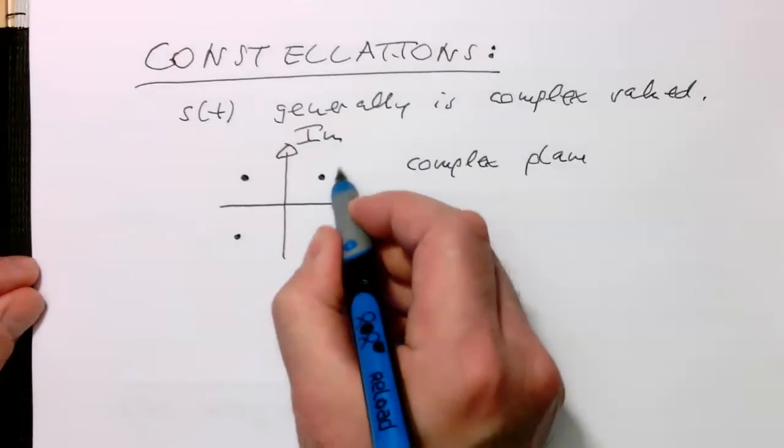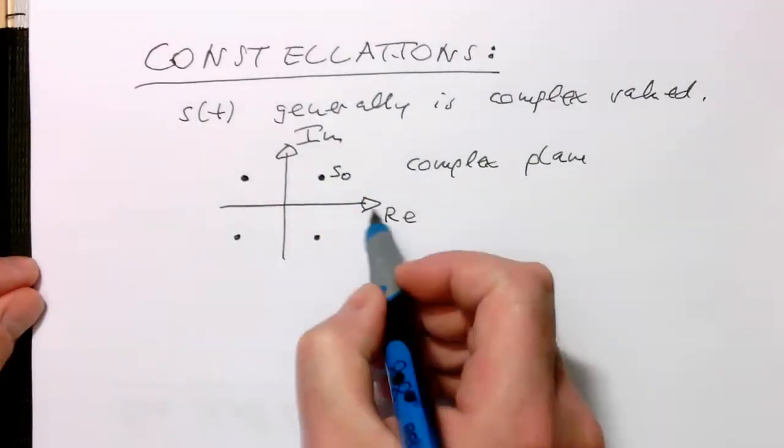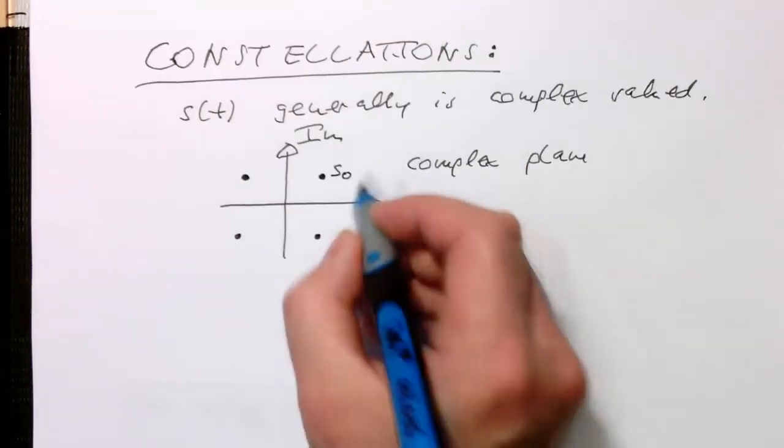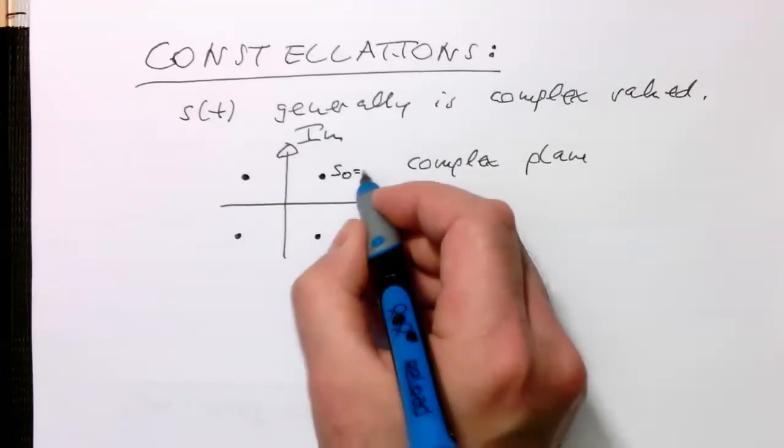So for example, let's say this is S0, and this means that the real and the imaginary part are 1. So this would give us here something like 1, 1.